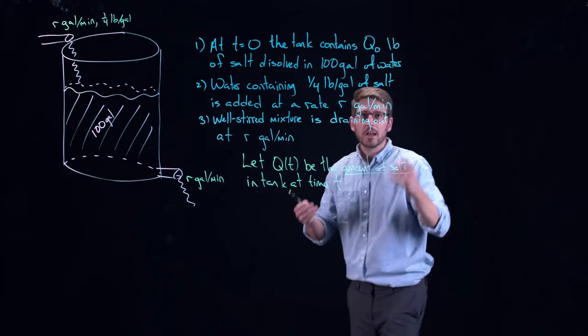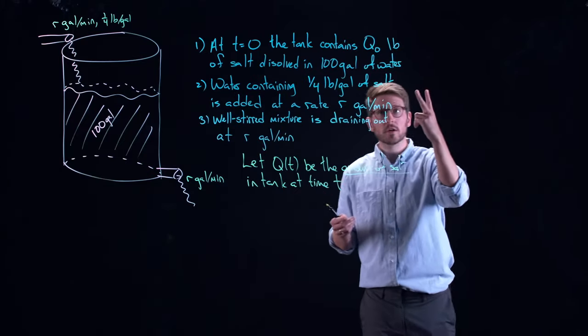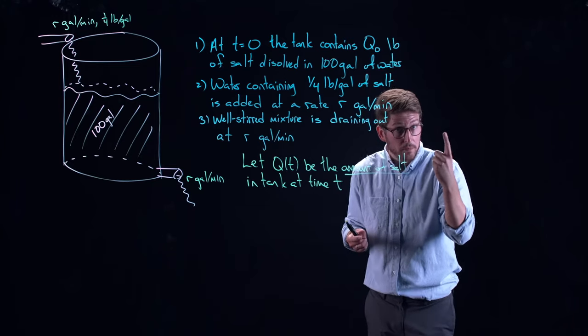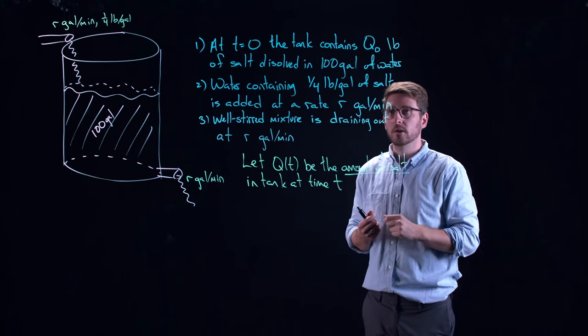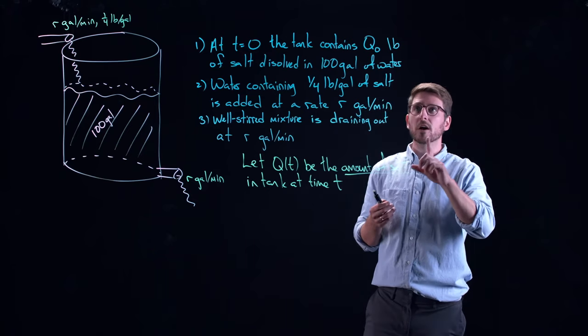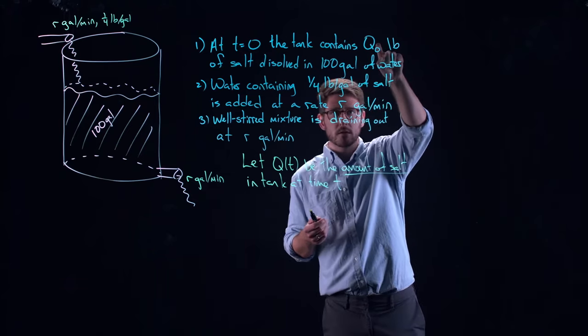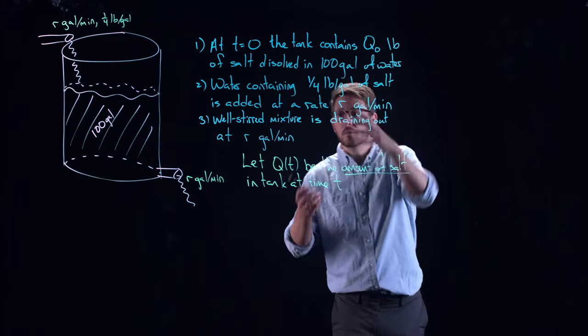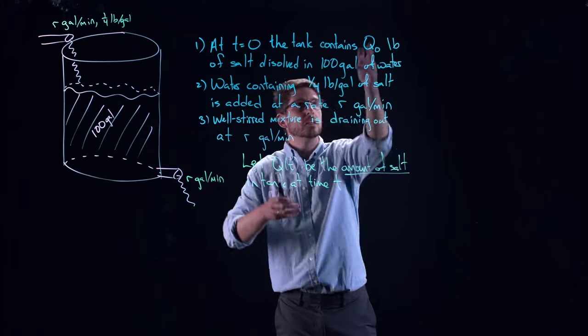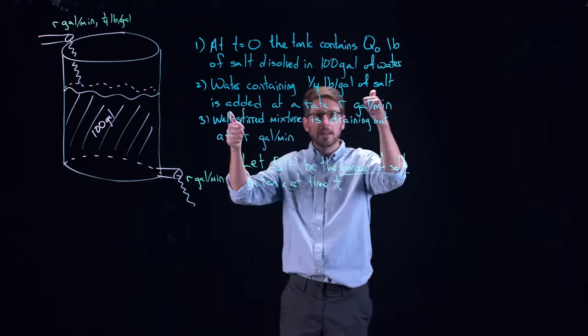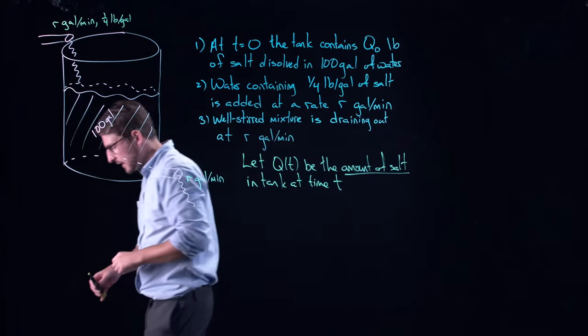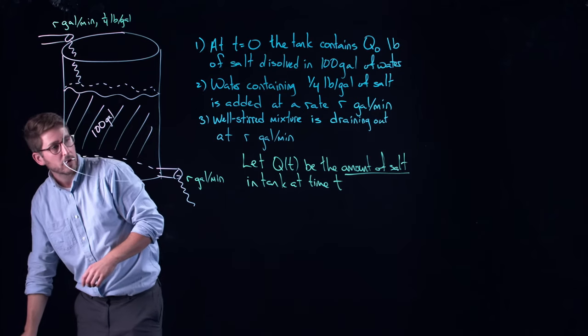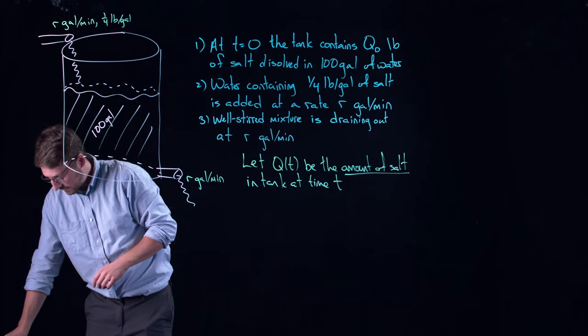Now, what we would like to do is we'd like to set up an initial value problem. Now remember, initial value problem is composed of two different components. First of all, the problem component, that's the differential equation, and the initial value component. And luckily for us, we already know the initial value. It's right here. So we know that Q of zero is equal to Q naught. That's good. That makes our life slightly easier.